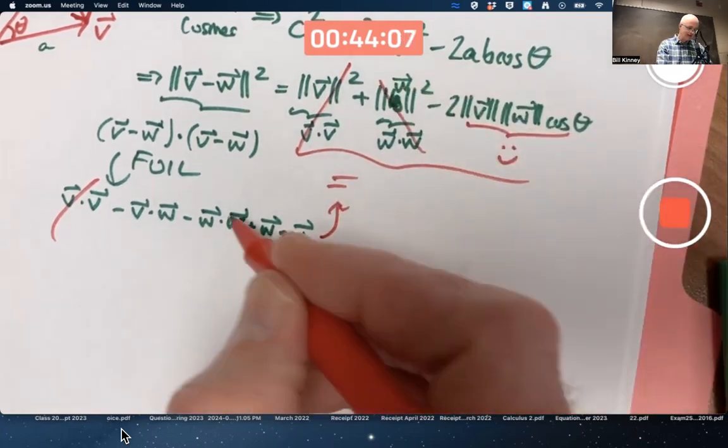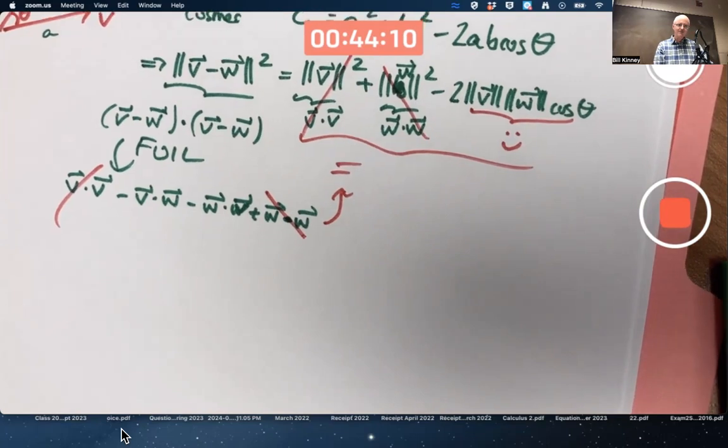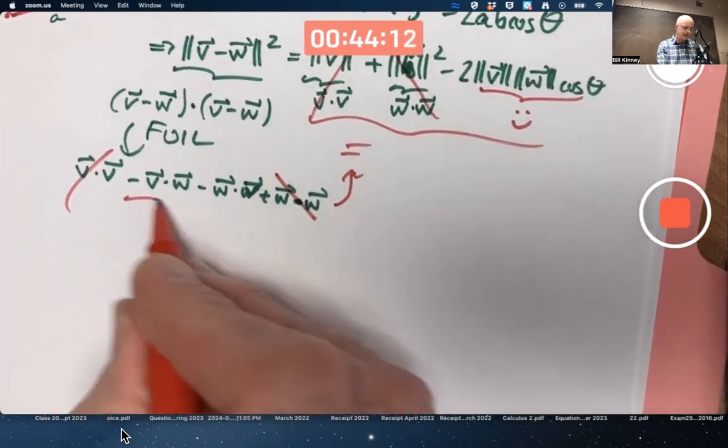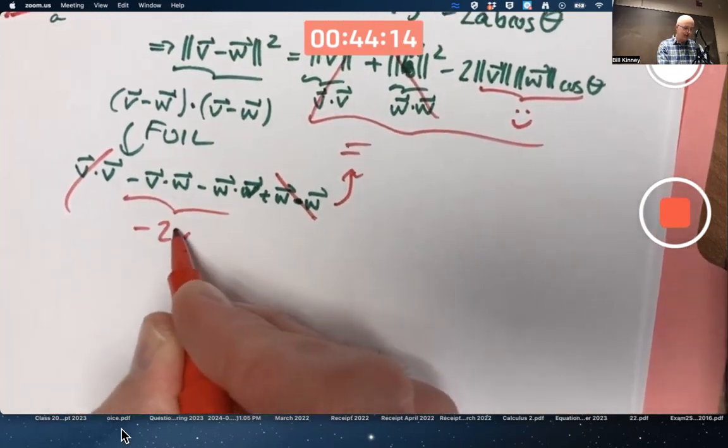This cancels with that. By the commutative property. This simplifies to minus 2 V dot W.